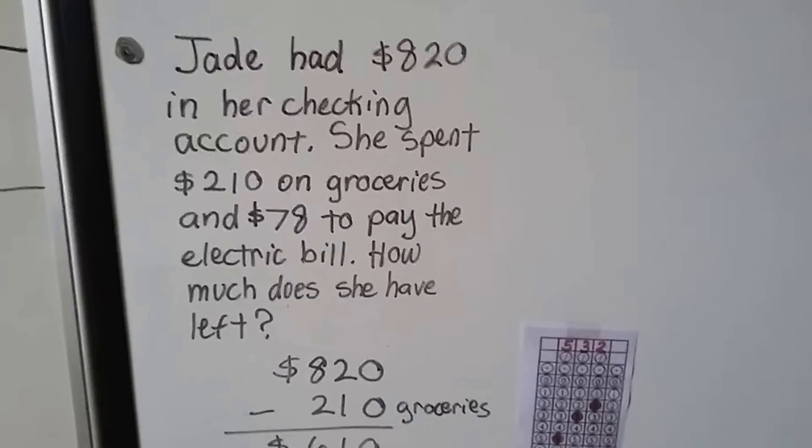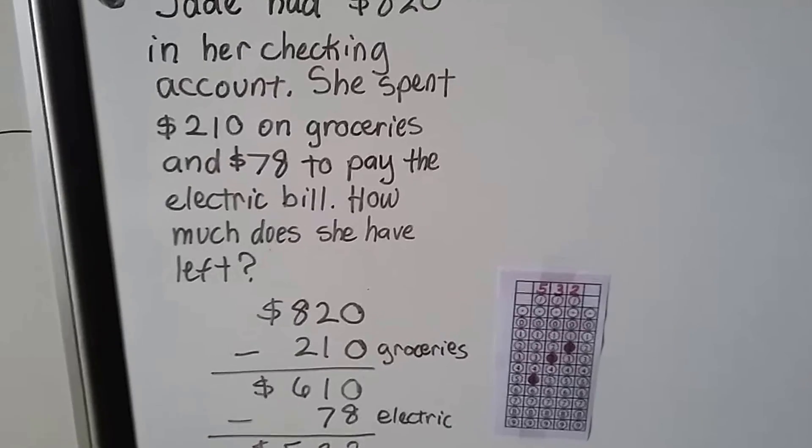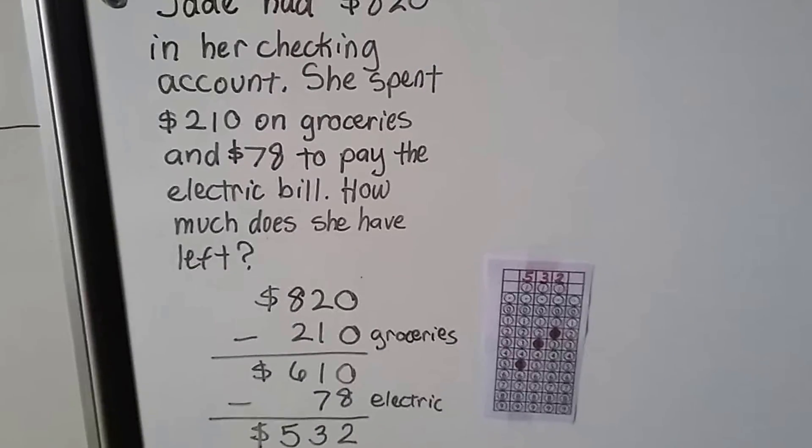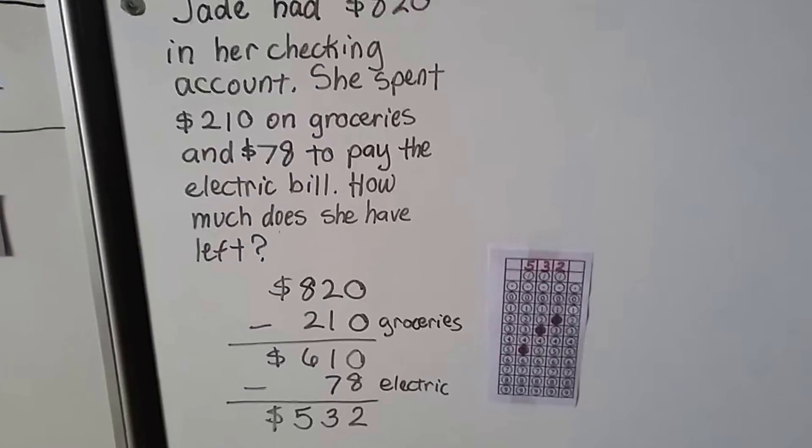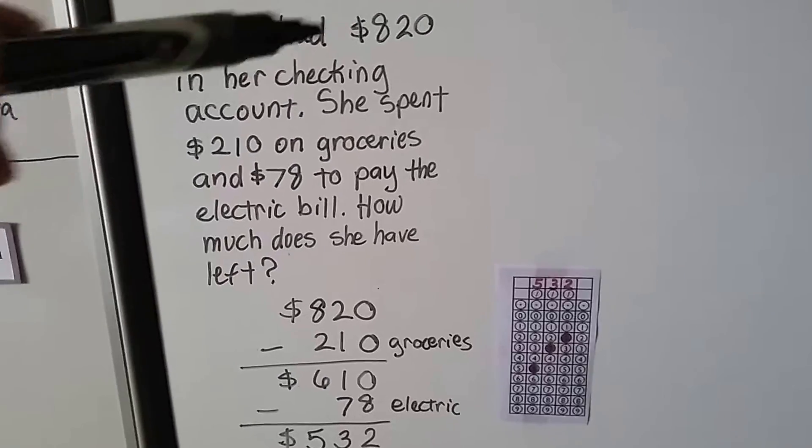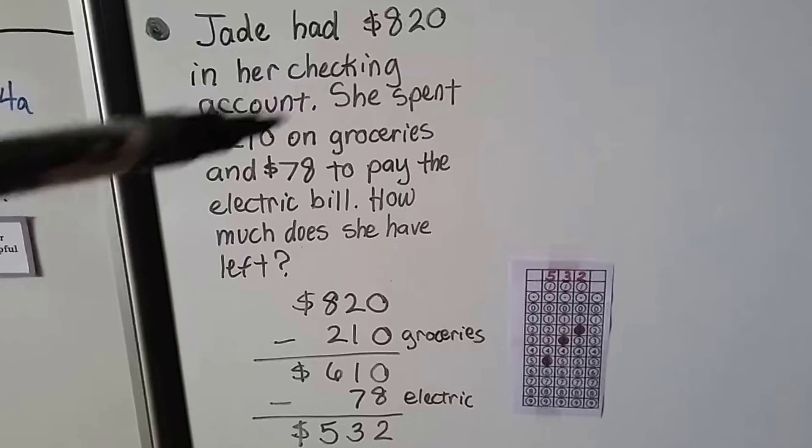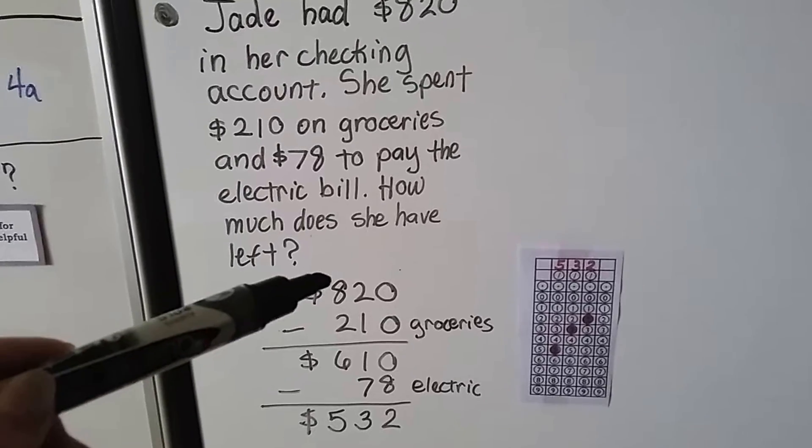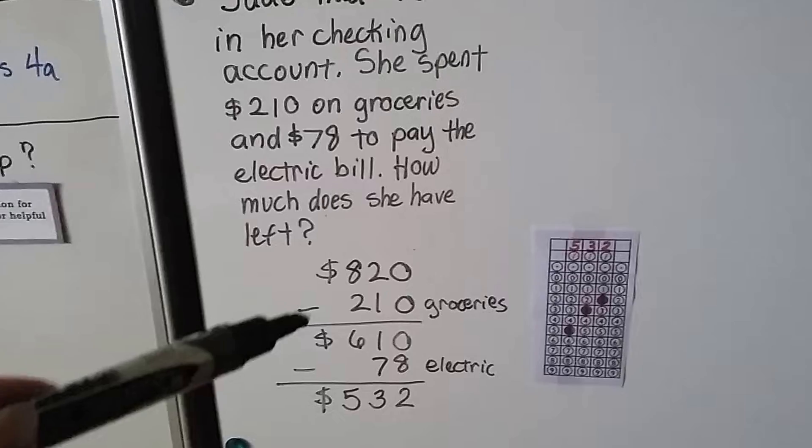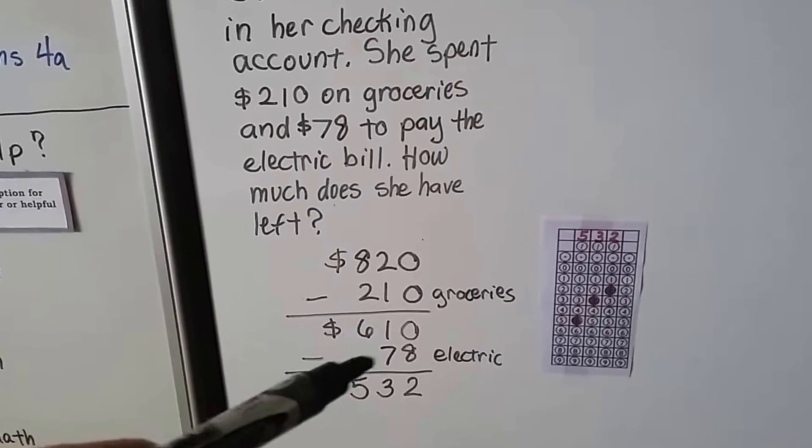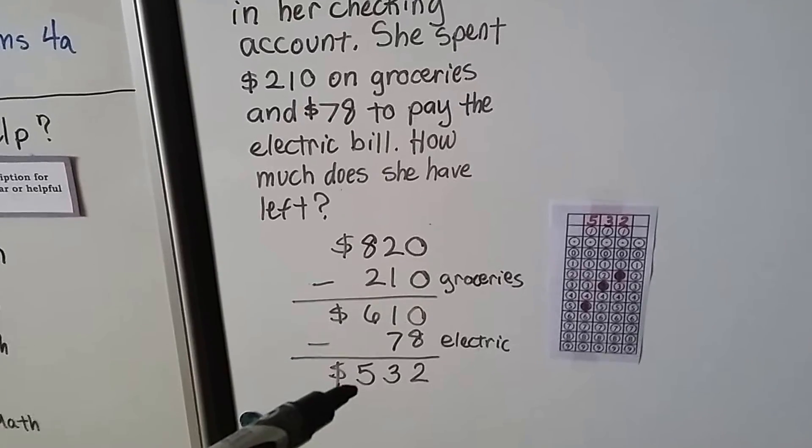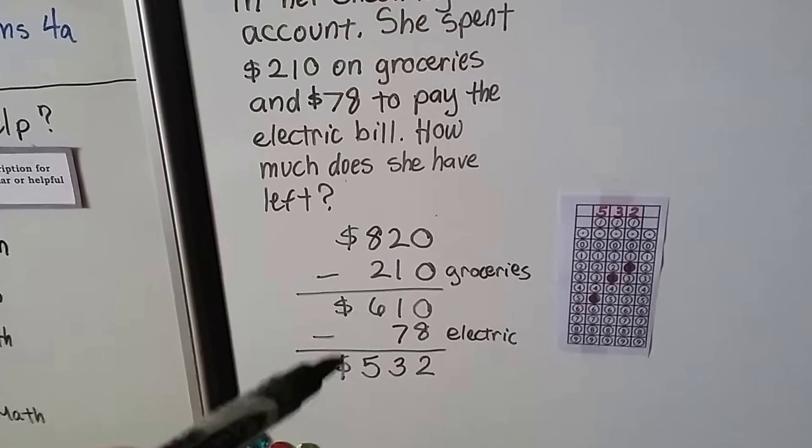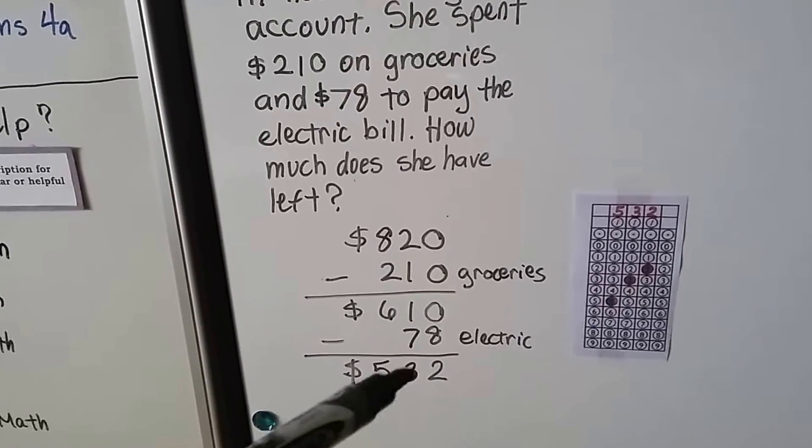Jade had $820 in her checking account. She spent $210 on groceries and $78 to pay the electric bill. How much does she have left? Well, we need to start with this amount and subtract and subtract. We start with the $820, take away the $210 for groceries and get $610. We take away the $78 for the electric bill and we're left with $532 in her checking account. We ignore the dollar sign. The answer is $532.